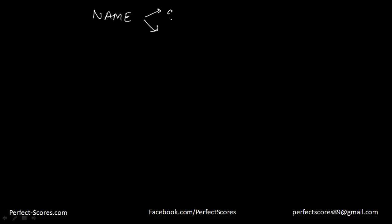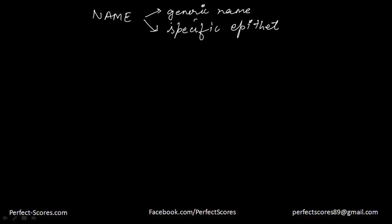Lots of universally accepted principles are there. Each name has two components: one is called the generic name and the other is called a specific epithet. Because there are two components, this system of nomenclature is called binomial nomenclature — bi stands for two.